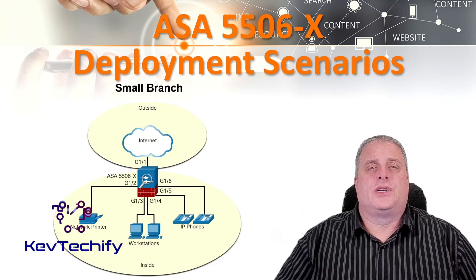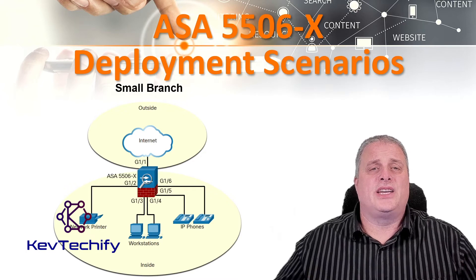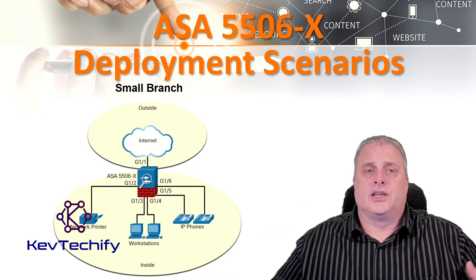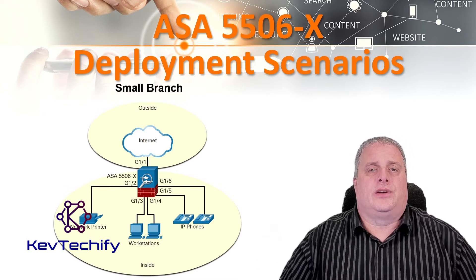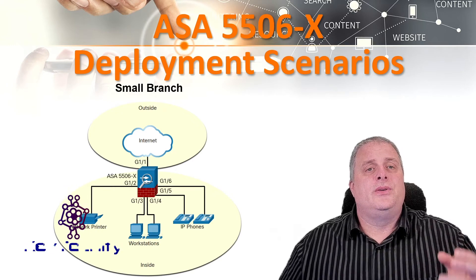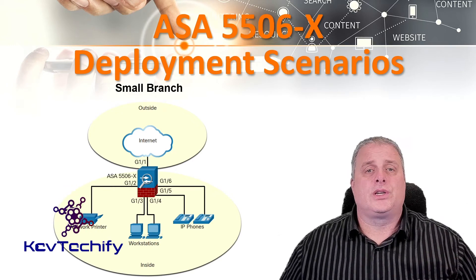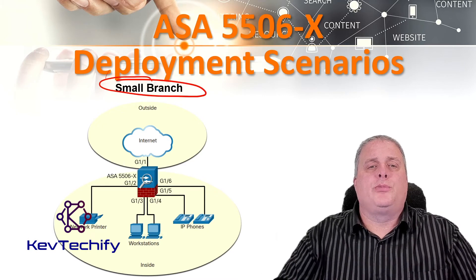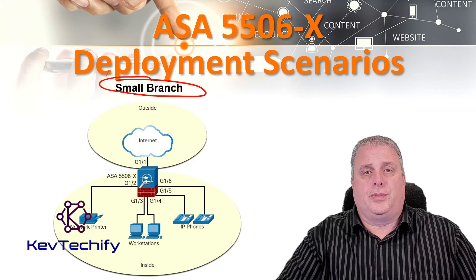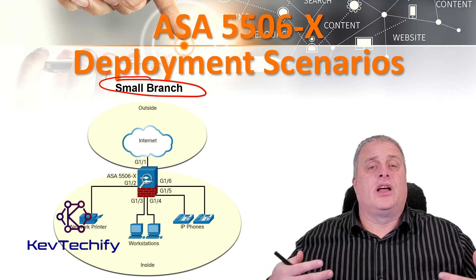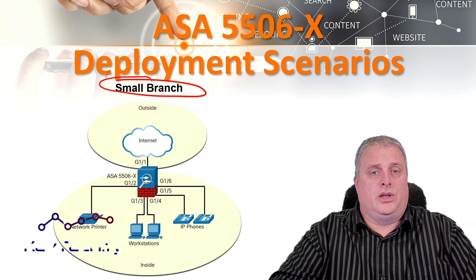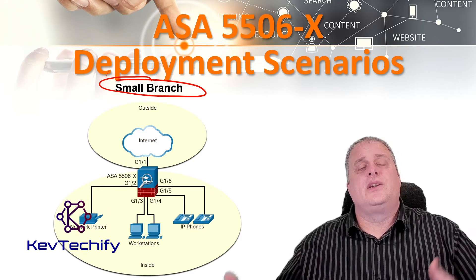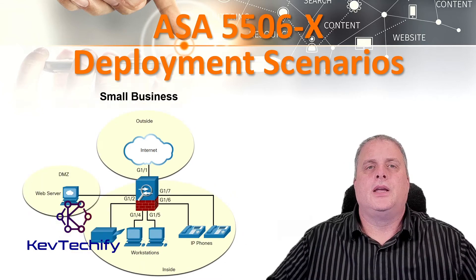The ASA 5506X is commonly used as an edge security device. It connects a small business to an ISP service, such as a DSL or cable modem, for access to the internet. It can be deployed to interconnect and protect several workstations, network printers, and IP phones. In a small branch, a common deployment would include an inside network, typically VLAN 1, with a security level of 100, and an outside network, VLAN 2, with a security level of 0.